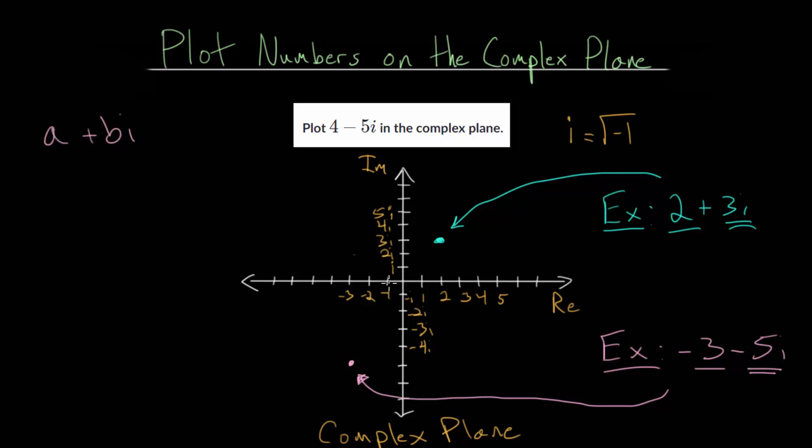So every possible complex number, a plus bi, is somewhere on this complex plane, where a and b are just normal numbers. It's just for our imaginary part that it's going to be some multiple of i.